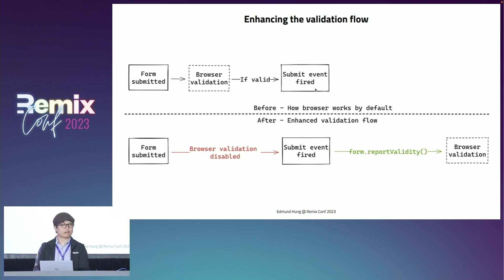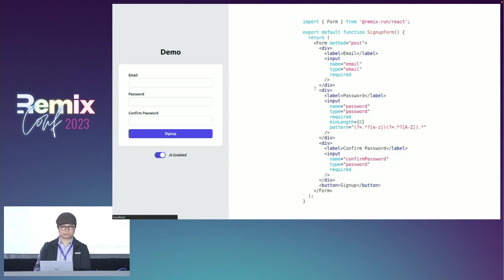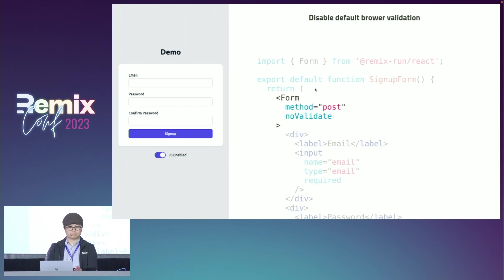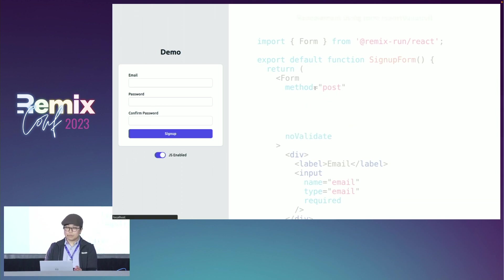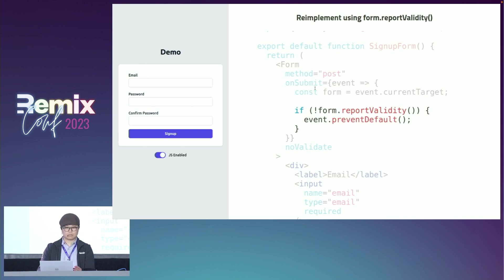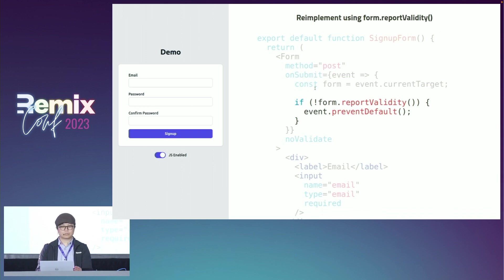Let's apply this to our sign-up form example. First, we disable the default browser validation with the novalidate attribute. Then we will implement it on the submit event using the reportValidity method. We are also preventing the form from submitting with the preventDefault method.